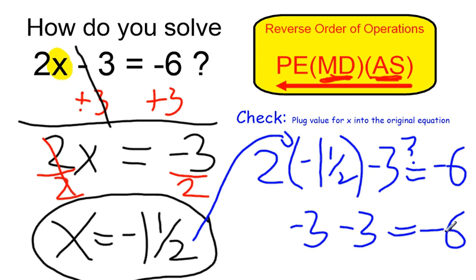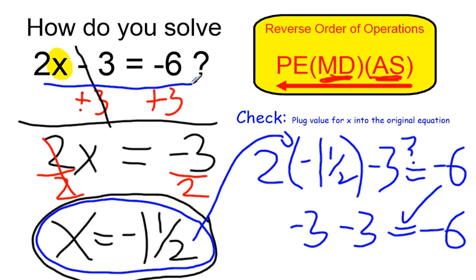I start at negative 3, go down 3 more, end up at negative 6. So it does check out. And I have confirmed that x equals negative 1 and a half is my correct answer. It's the solution to my original equation. Thank you.